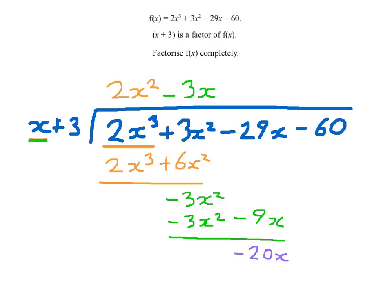What do I need to times x by to make minus 20x? Well that's minus 20. Because minus 20 times x is minus 20x, and minus 20 times 3 is minus 60. I now perform subtraction. Minus 20x minus minus 20x is 0. It always will be.